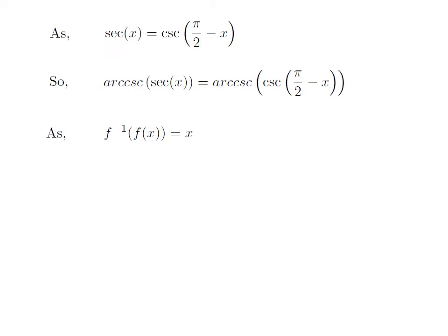As we know, inverse of function f of function f of x is equal to x. As arccosecant is inverse of cosecant function, arccosecant of cosecant of pi by 2 minus x is equal to pi by 2 minus x. This implies the value of arccosecant of secant of x is equal to pi by 2 minus x.